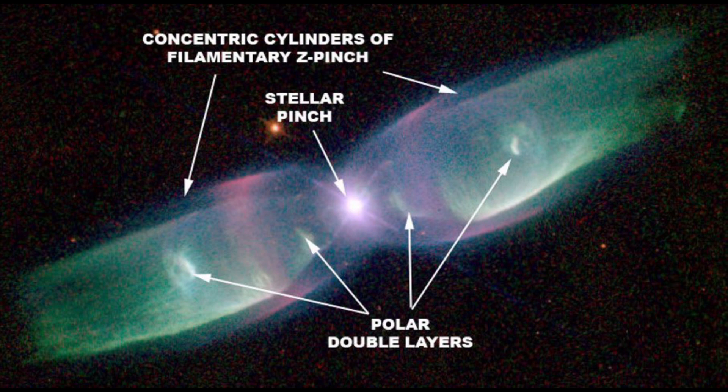Z-Pinch in Action. The plasma universe consists of swirling streams of electrons and ions flowing in filaments. There is a tendency for these filaments to repel at close range and to track at greater distances. Within the shell of a planetary nebula are one or more plasma sheaths, or "double layers," that act like capacitors, alternately storing and releasing electrical energy. The current flow alternately increases and decreases within the sheaths inside and outside the shell.